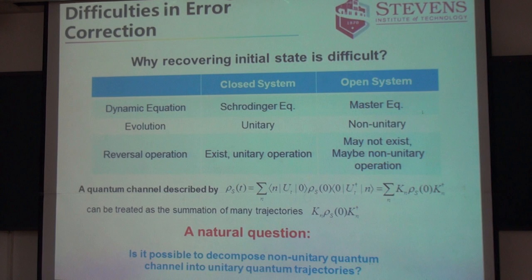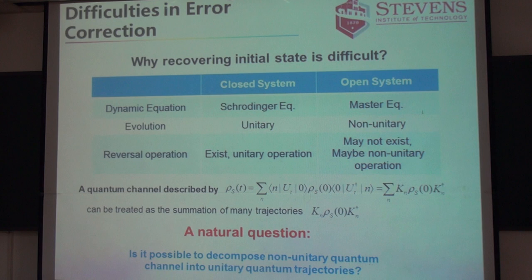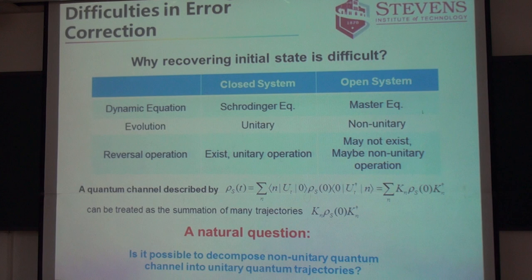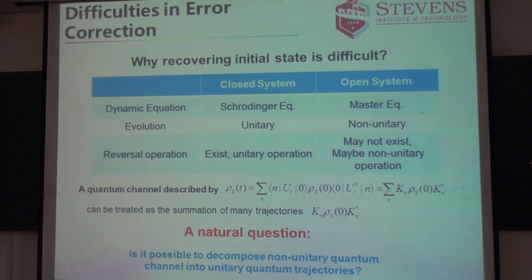For the open system, the system of interest is no longer isolated — your system is interacting with the environment, which can be complex or simple. In this case, you can't use the Schrödinger equation anymore; instead, you have to use the master equation, which is typically very complicated. There's a lot of research on how to derive a generic master equation for the n-qubit system and how to put control into the formulas. Here, I will use a different approach: without using the master equation, I call this the Kraus operator approach, which is of course equivalent to the master equation, but more convenient when talking about quantum control.